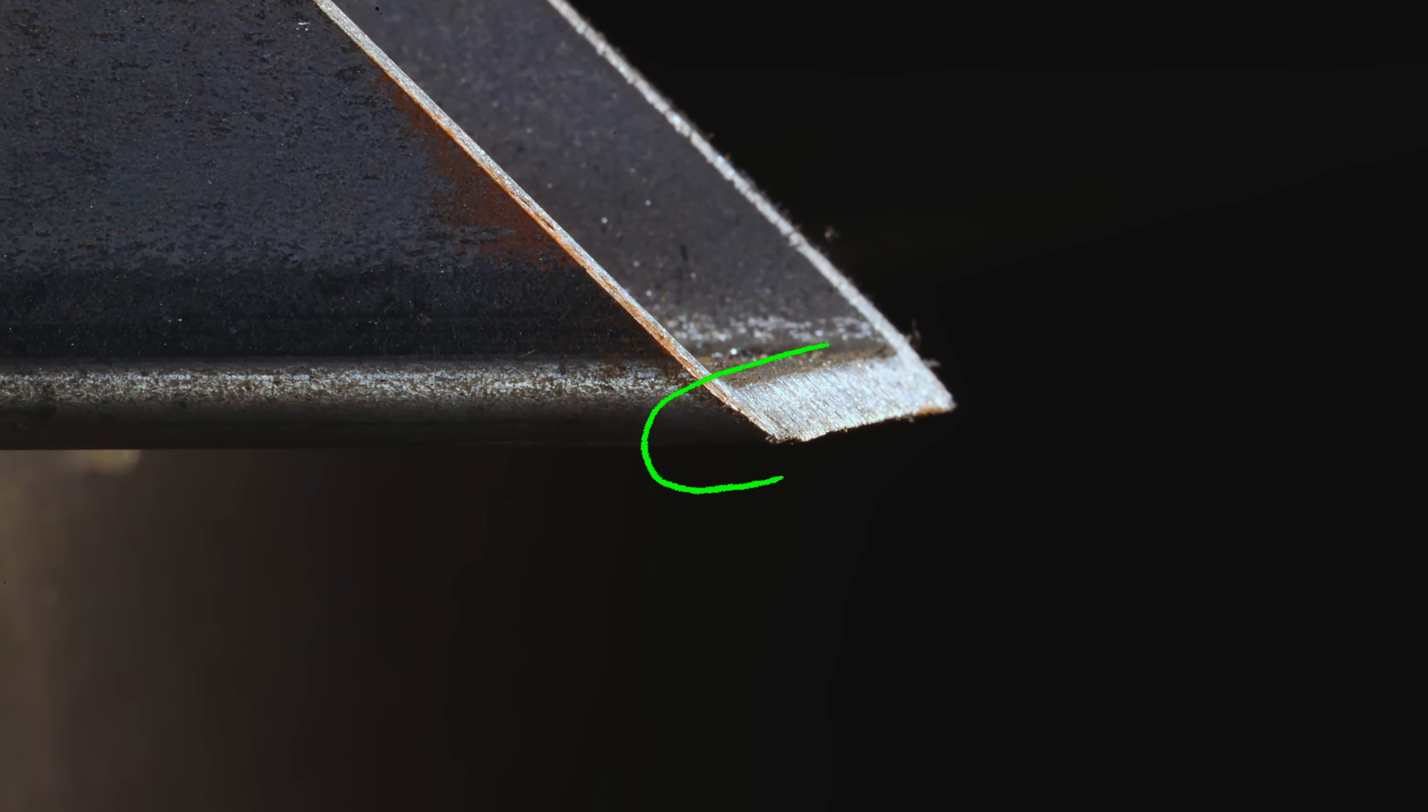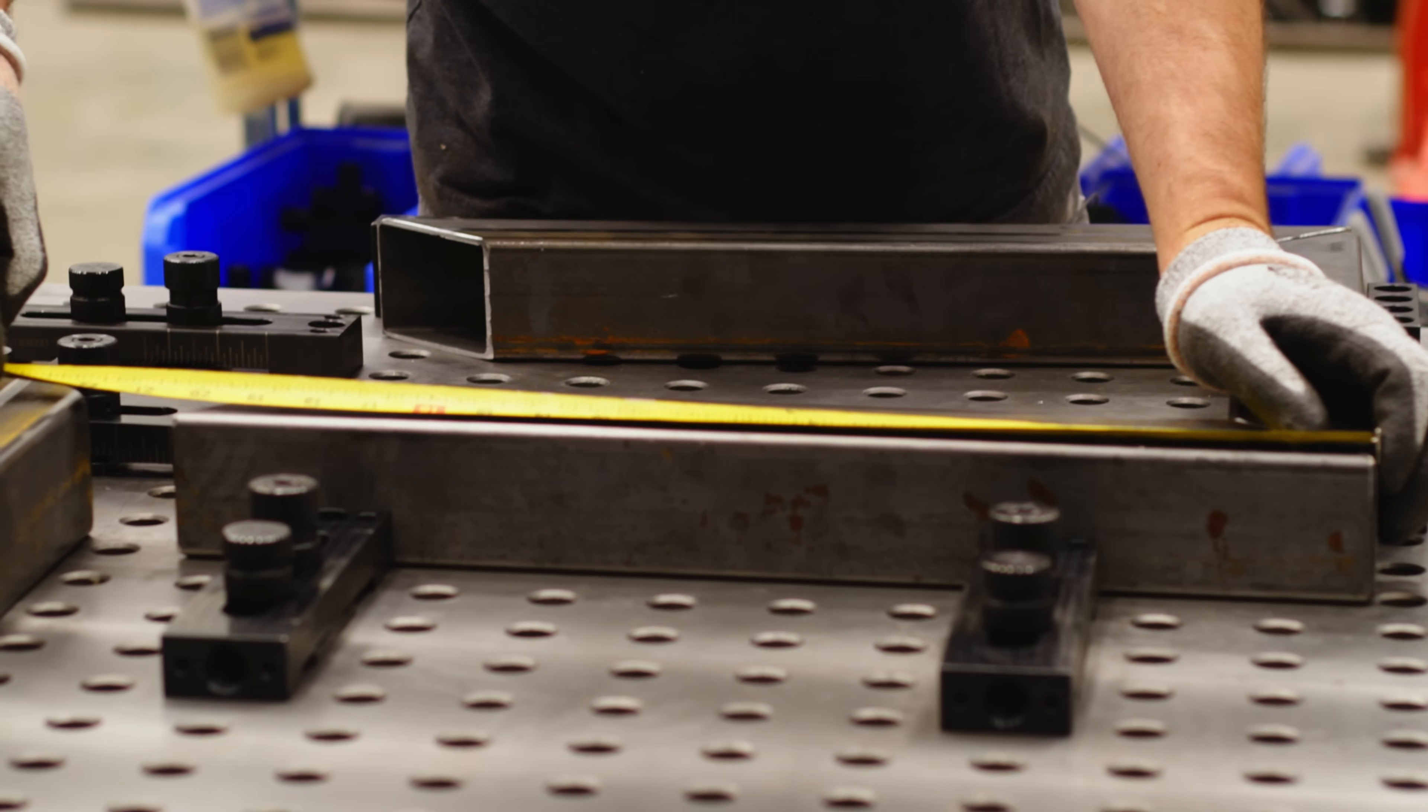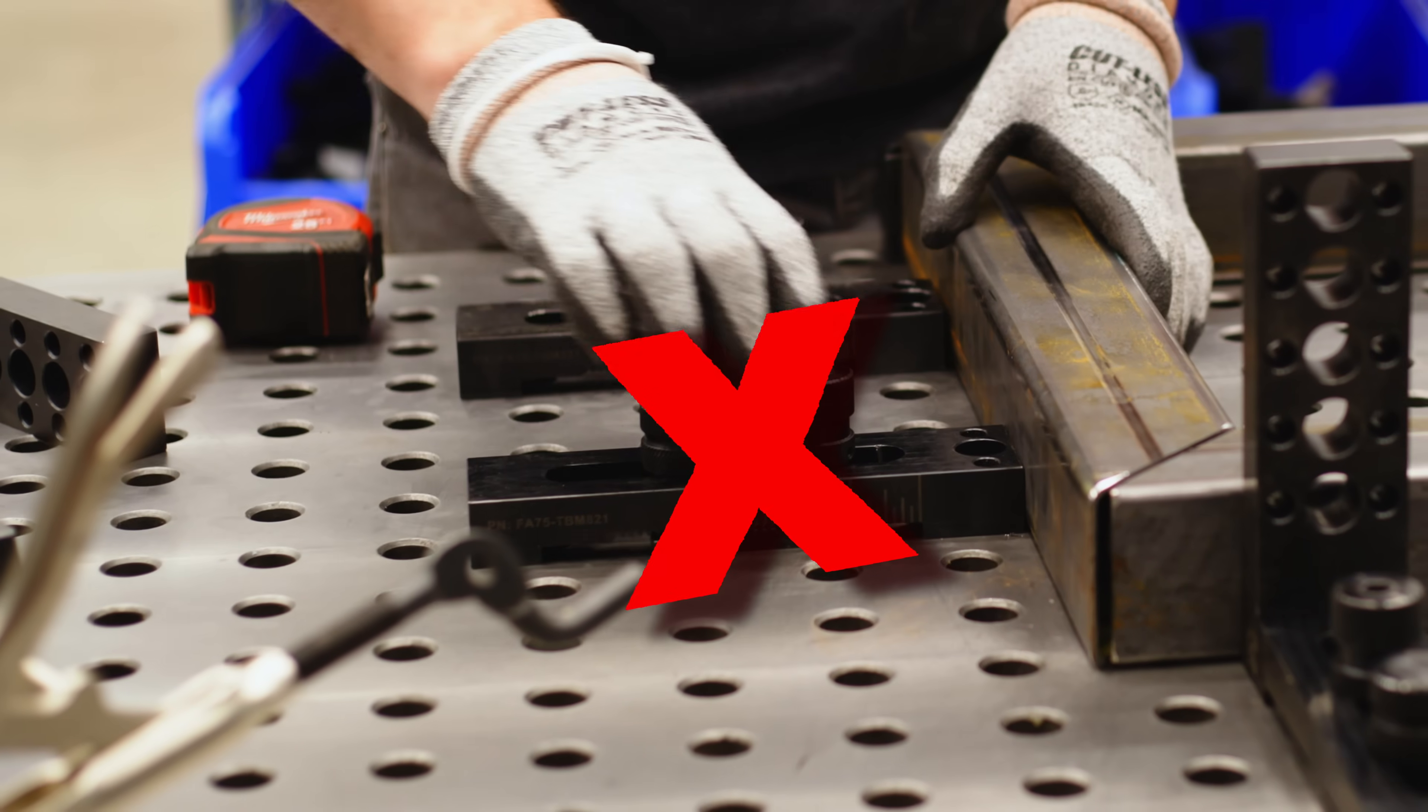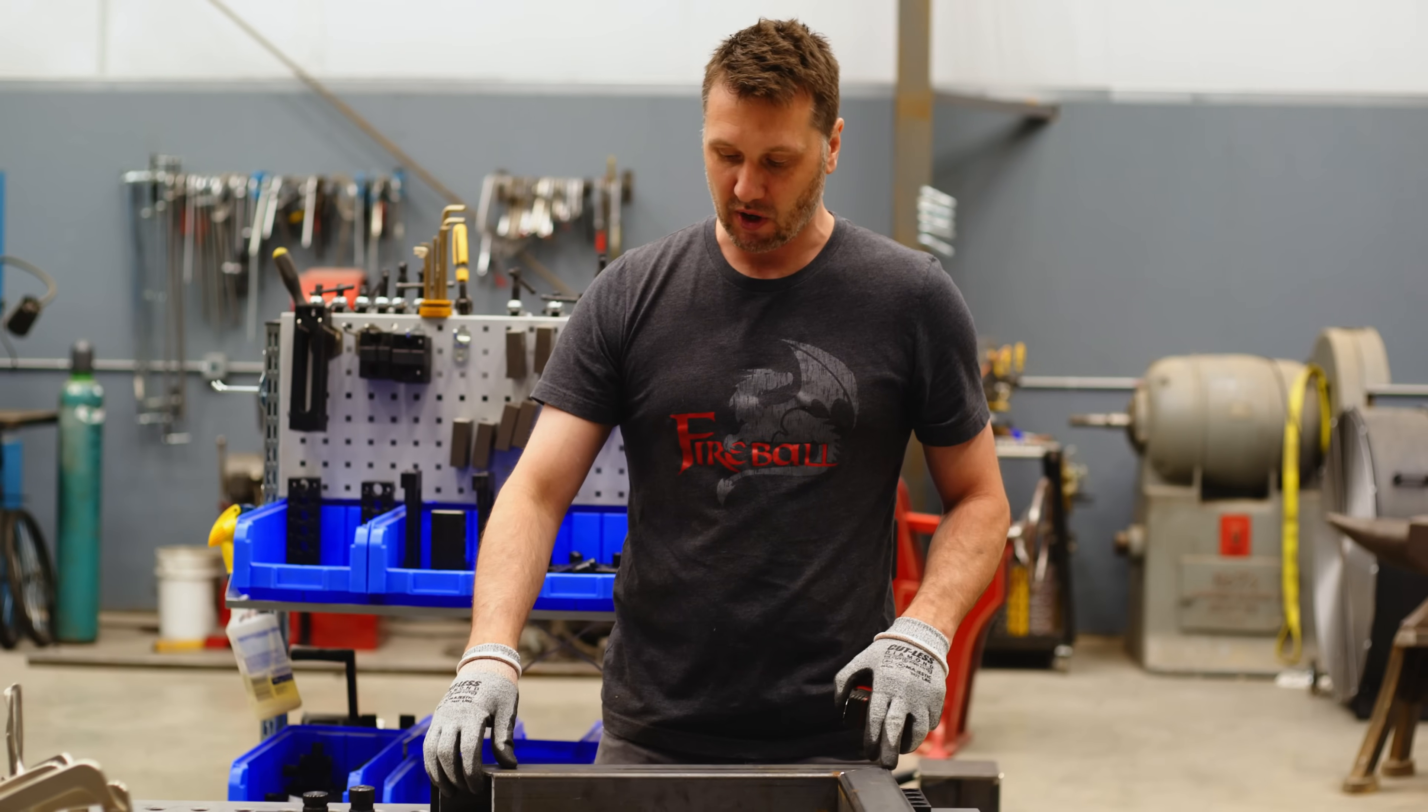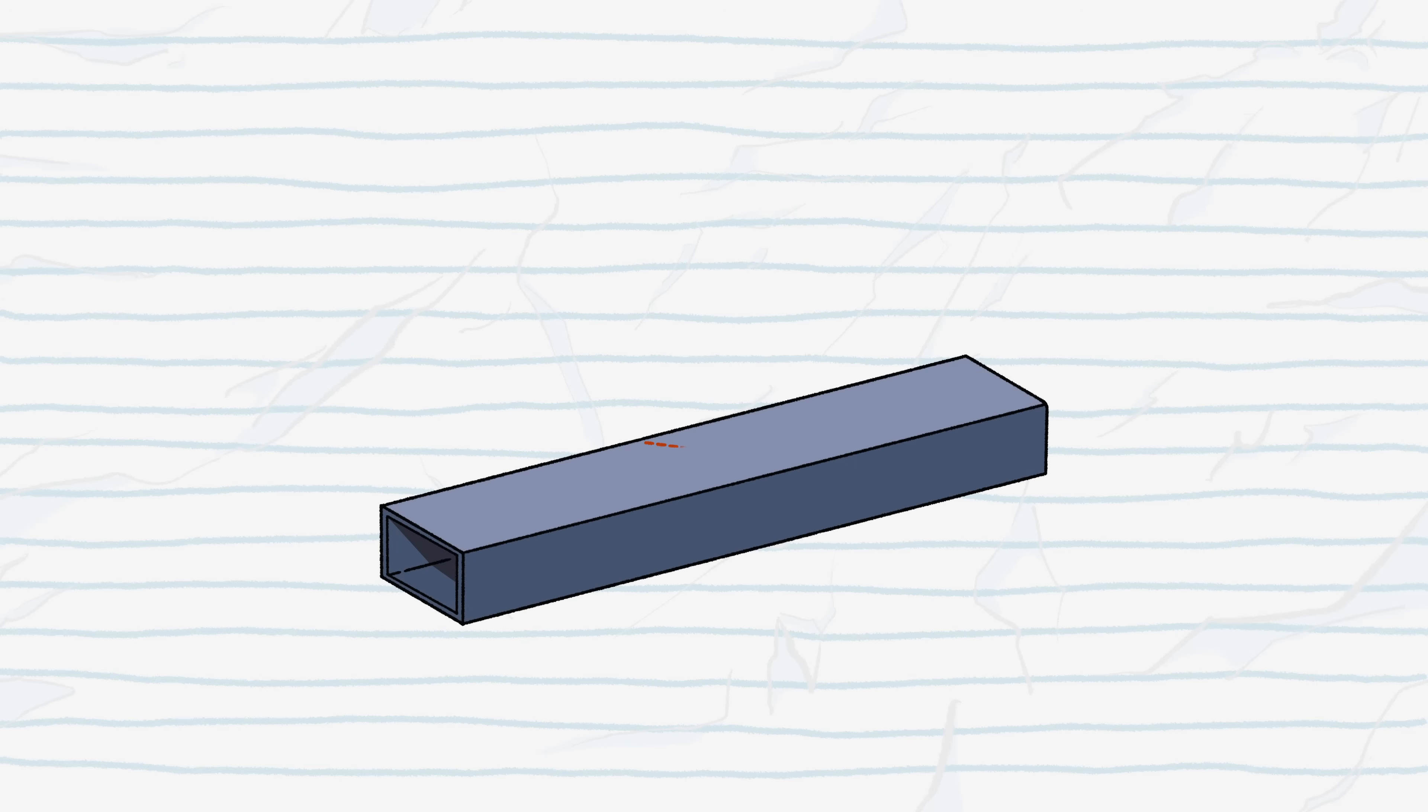But most people would just continue to weld this together. And then when they're all done, they pull their measurement on the outside and go, dang it. Or they'd move this back to accommodate the material. But this is the beauty of fixture tables. It's going to limit me. And now I have to, as a fabricator, make some adjustments.